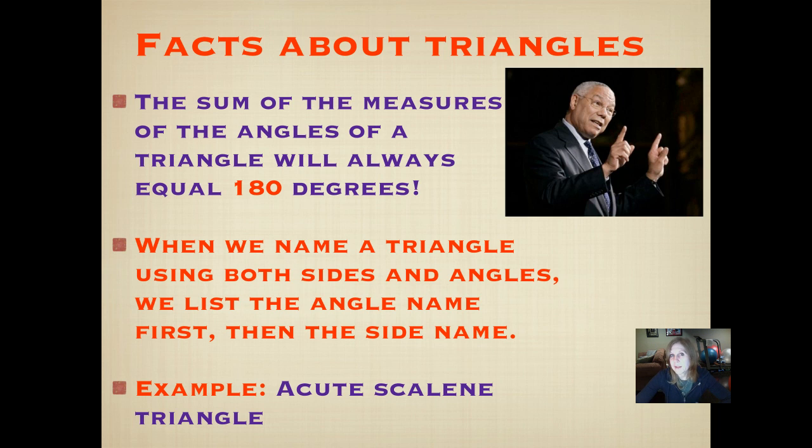Also, we can name a triangle by its lengths, the length of its sides, or we can name it by its angles. But we can also name it using both of those, the sides and the angles. If we do that, we list the angle name first, and then the side name. That's just a little thing that makes you look like you really know what you're doing. For example, if we had an acute triangle that was also a scalene triangle, we would name it an acute scalene triangle. Because acute describes the angles, and scalene describes the length of the sides.